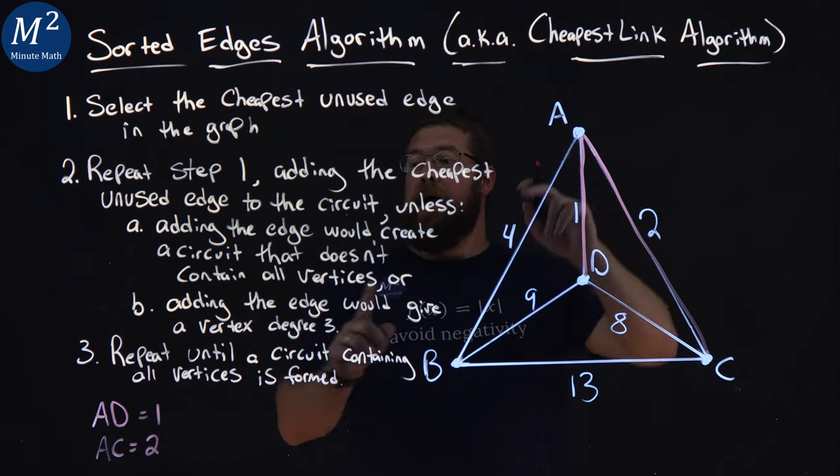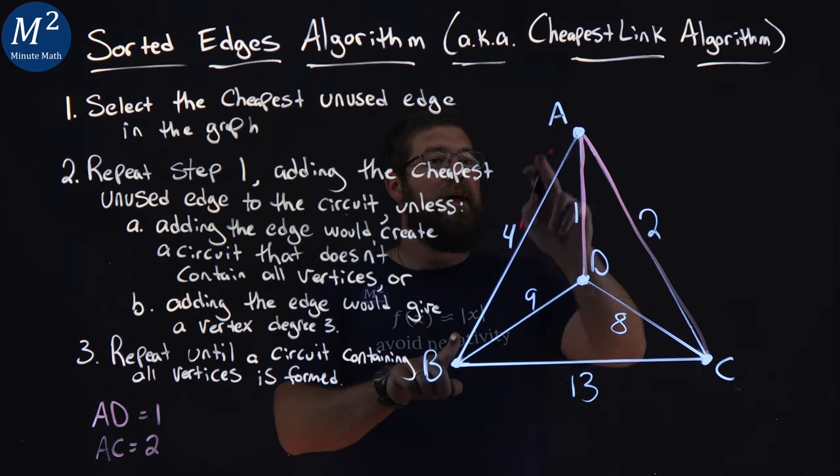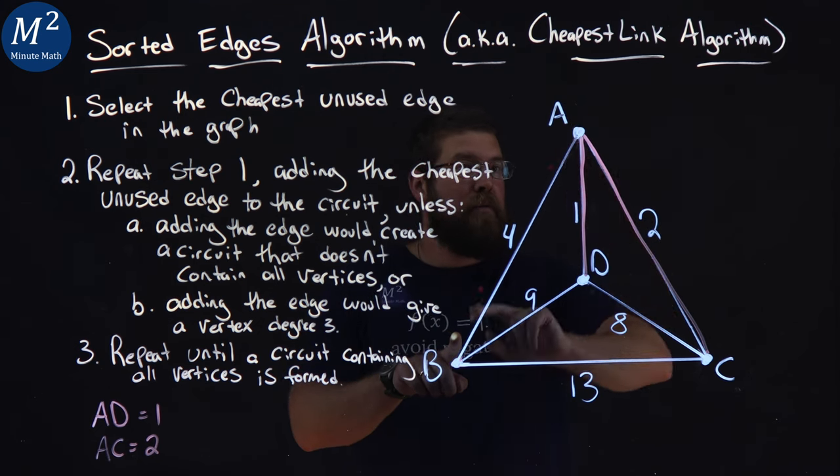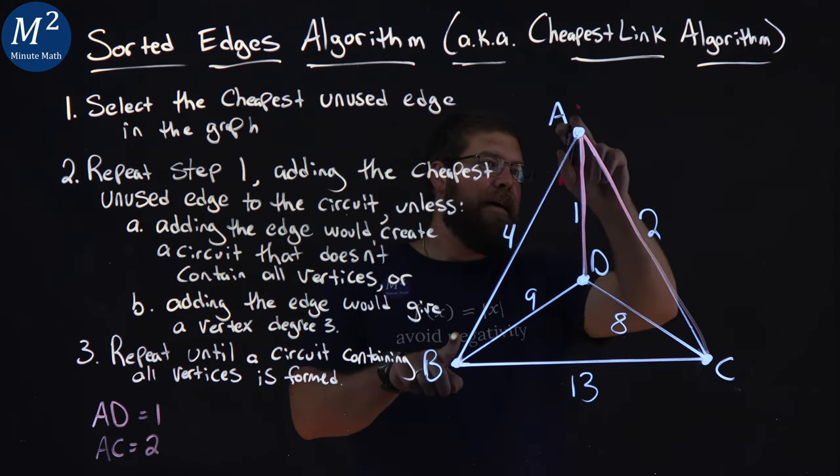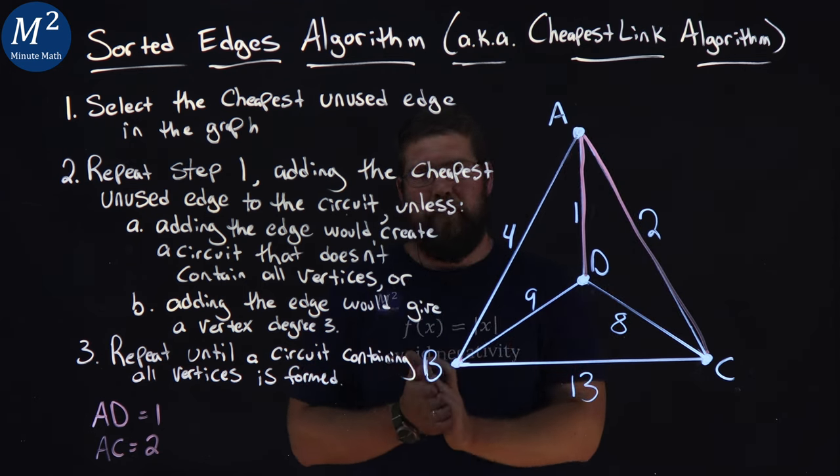And then B, adding the edge would give a vertex degree three. If I had this edge AB, A would be degree three now. Three edges coming out of that vertex. So no, I cannot use AB.